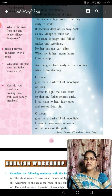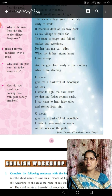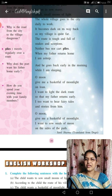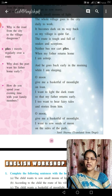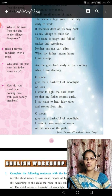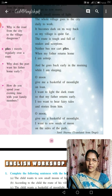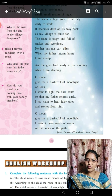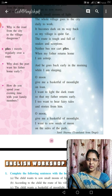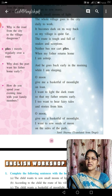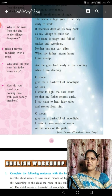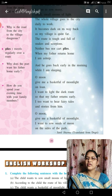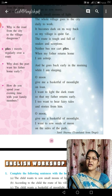In the last stanza: 'Oh moon, give me a basket full of moonlight. I want to sow seeds of moon on the side of the path.' The child is repeatedly requesting the moon to give him a basket full of moonlight, and he wants to sow the seeds of moon on the side of the path. In this way, the poet throws light on the problems of the villagers and the very pathetic condition of the child, who wants to receive more love from his father like any other child.